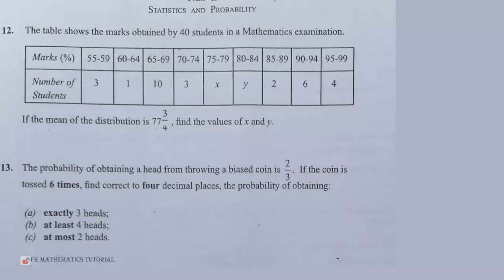We are solving the WAEC 2023 November-December Paper 2, on the Statistics and Probability section. Question number 12 says the table shows the marks obtained by 40 students in a mathematics examination. If the mean of the distribution is 77 and 3/4, find the values of X and Y.